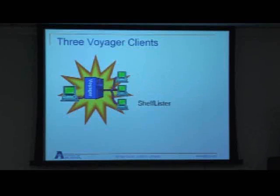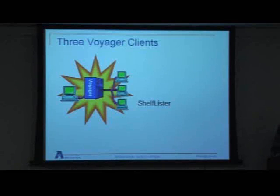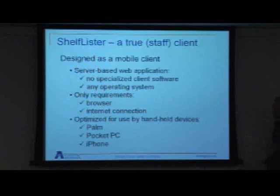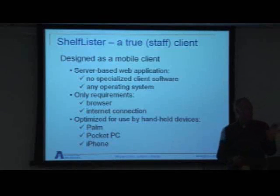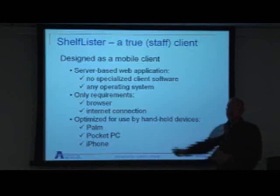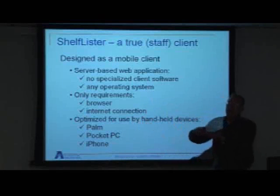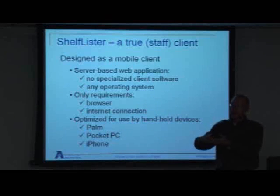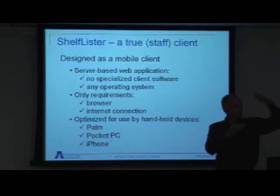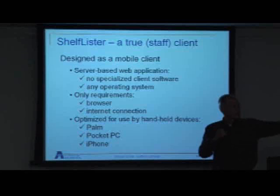The third one is Shelf Lister, which you could actually call a client. It's not only real-time but operates totally by itself. Shelf Lister is designed to work on a PDA. If a staff member has a wireless PDA, they can walk into the stacks, pull a book off the shelf, enter the barcode, go a bit further down the shelf, enter another barcode, and they'll get a generated shelf list of all the books between those two books.